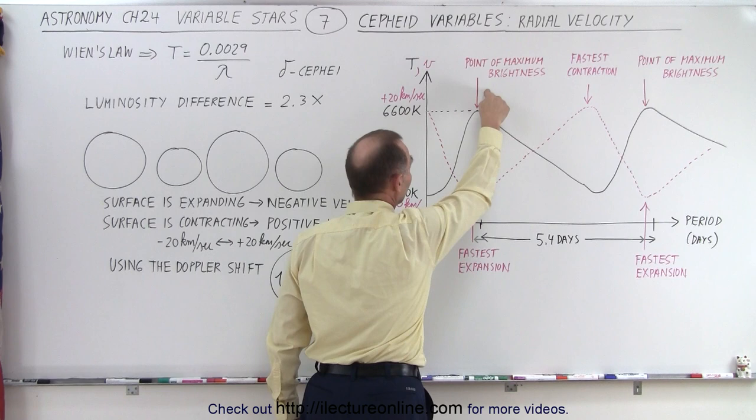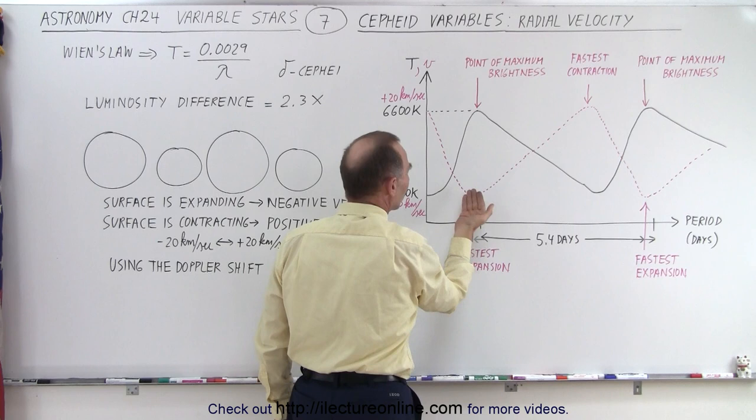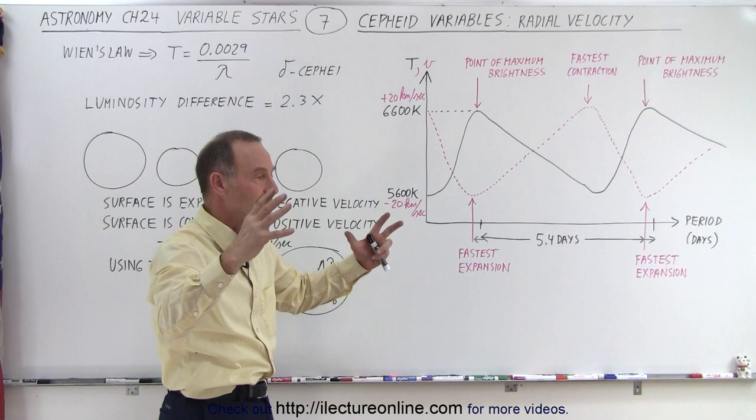And notice that when we have the point of maximum brightness, which is also when the temperature of the star is near its maximum, that's when the star is expanding at its maximum. That means that it's moving towards us at its maximum velocity.